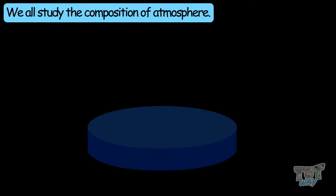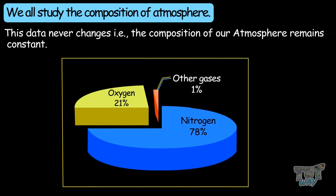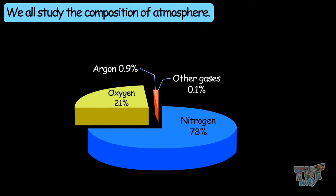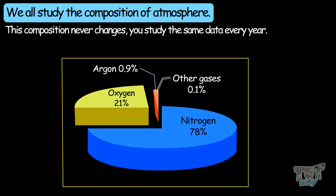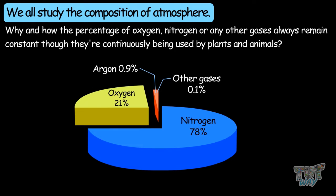We all studied the composition of our atmosphere. The composition will always be the same — oxygen is 21%, argon is 0.9%, and we have 78% nitrogen. This composition never changes; you study the same statistics every single year. Why and how do these gases always have the same concentration, even though they are being used by plants and animals? Let's try to understand this.